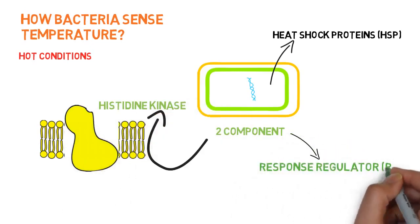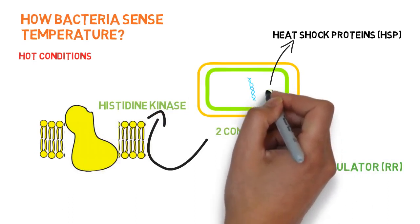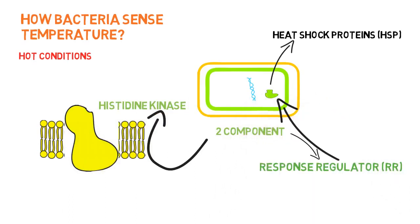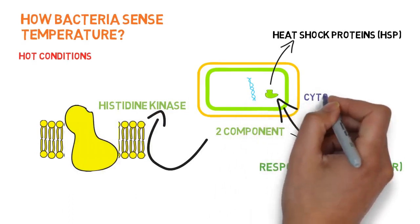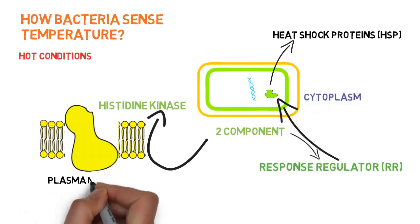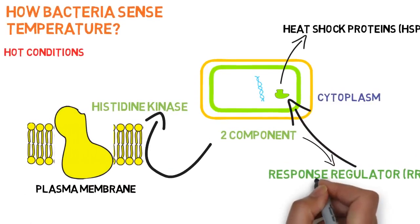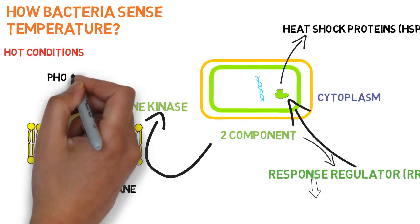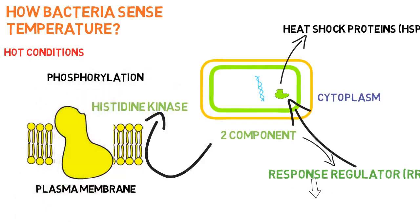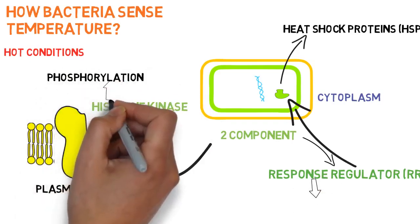The response regulator protein is present intracellularly, inside the cell or cytoplasm, whereas the histidine kinase is an integral component of the plasma membrane of the bacteria. Histidine kinase is responsible for phosphorylation like other kinases, whereas the